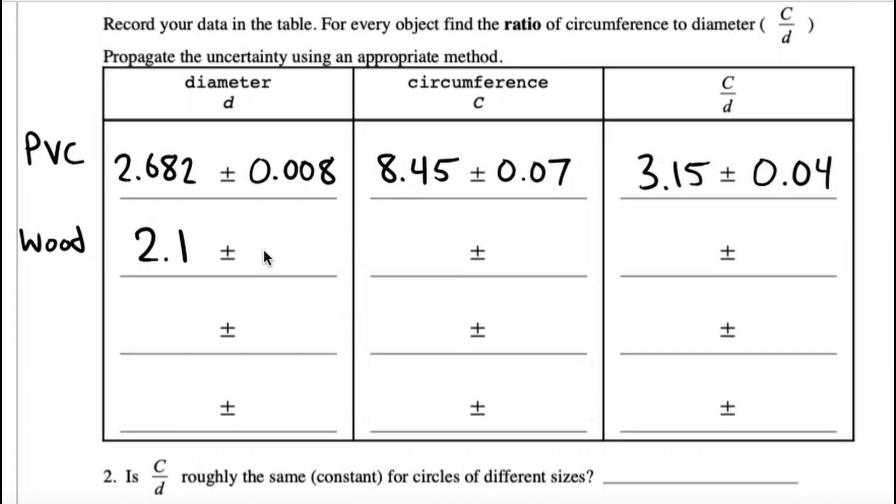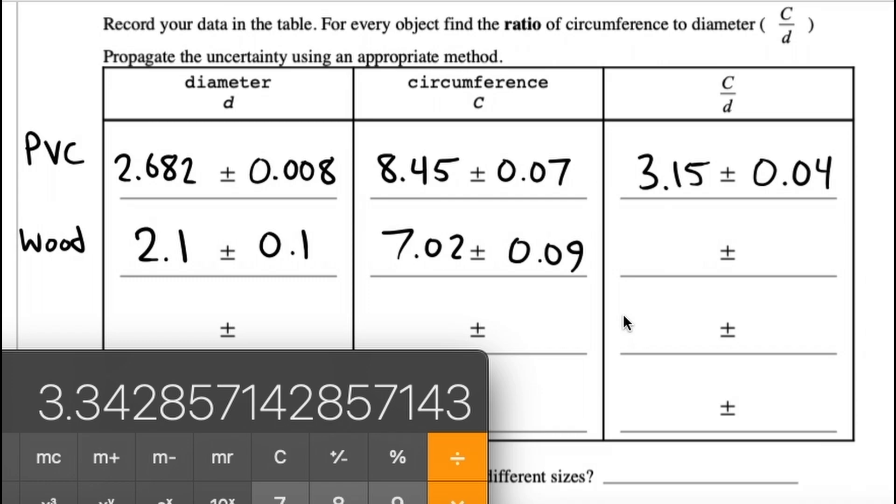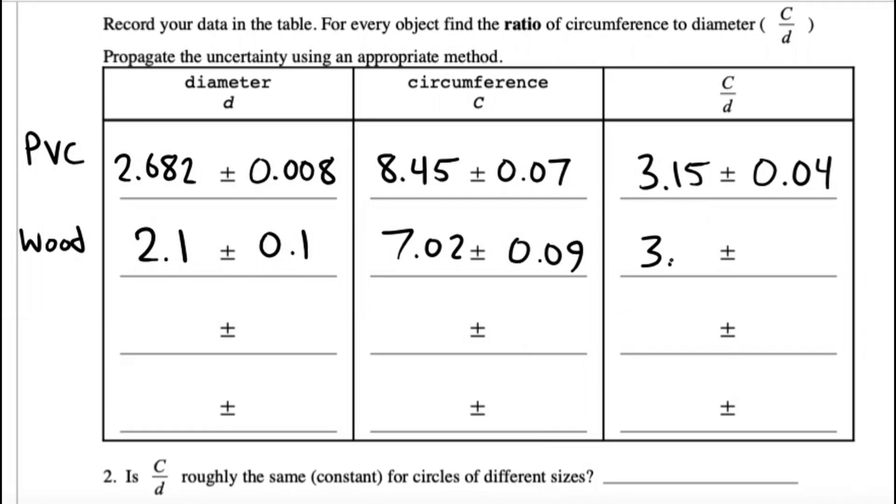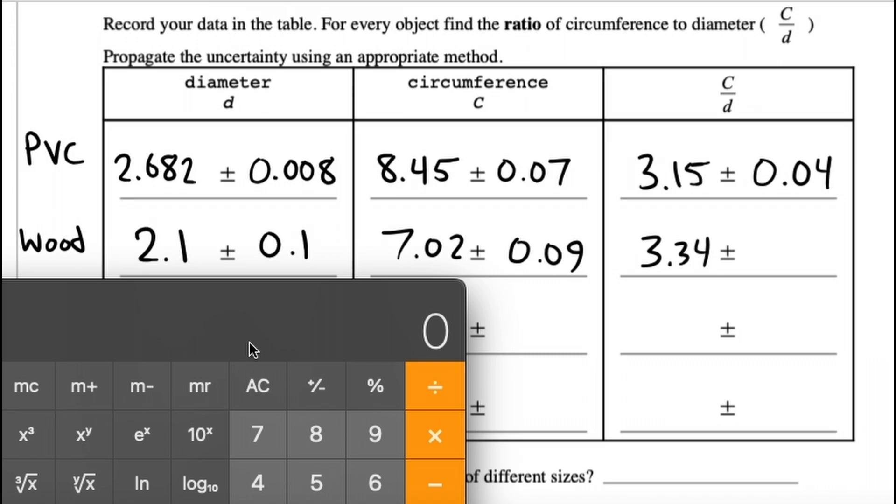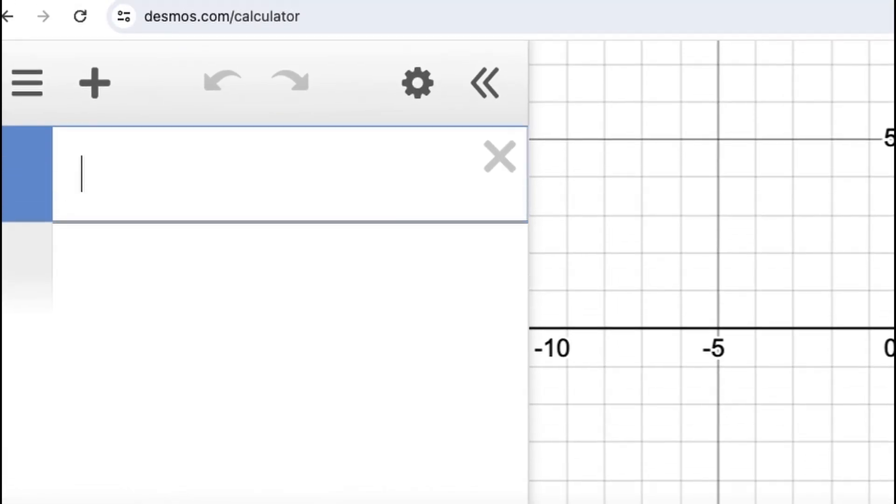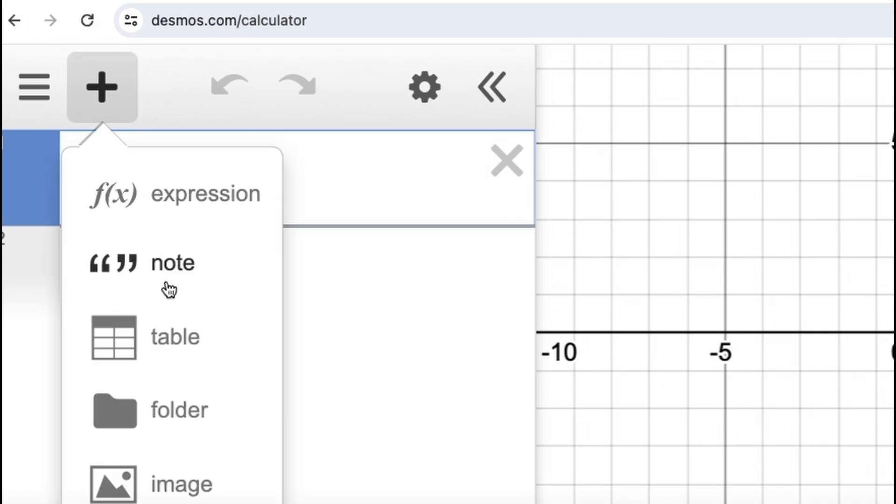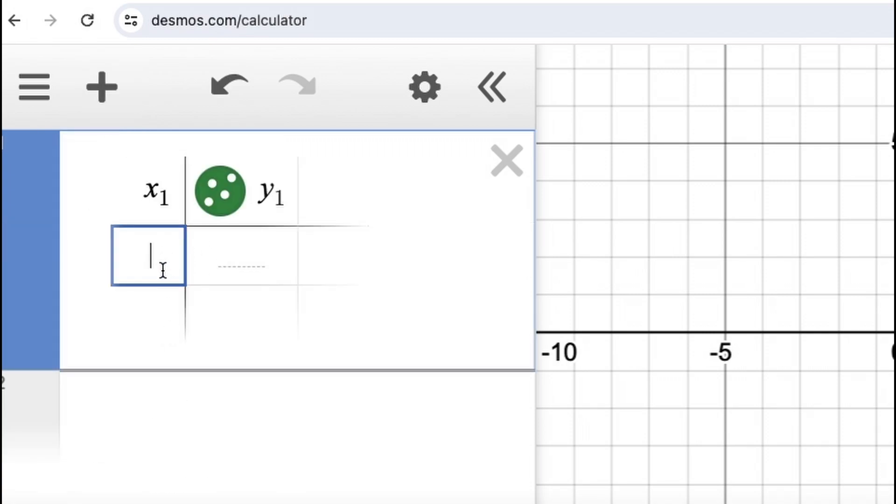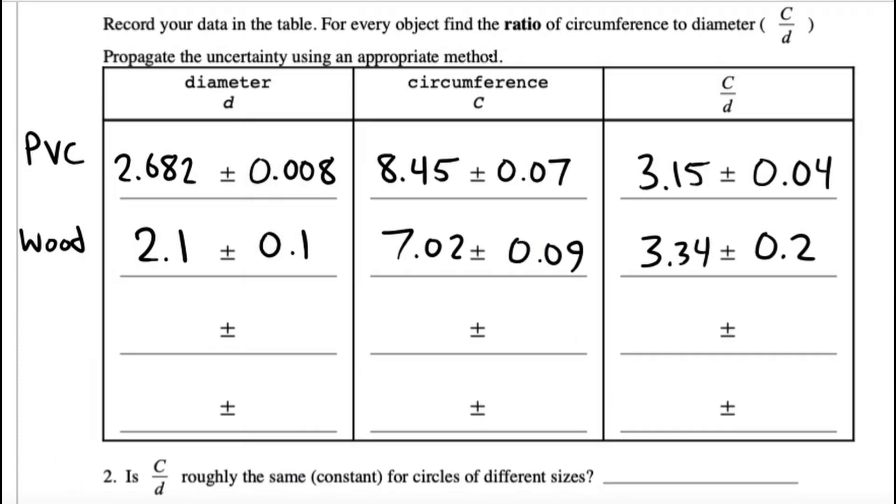So, I'm saying if you were to take this value, subtract the other end, and then cut it in half, that's another way to do it. Largest minus best, or largest minus smallest divided by 2. The wood was 2.1 plus or minus 0.1. 7.02 plus or minus 0.09. Best estimate was 3.34 for the wood. As you can see, it's quite a bit different from π. And then the uncertainty is going to be about 0.2. Now, you're going to have four of these, four different objects.